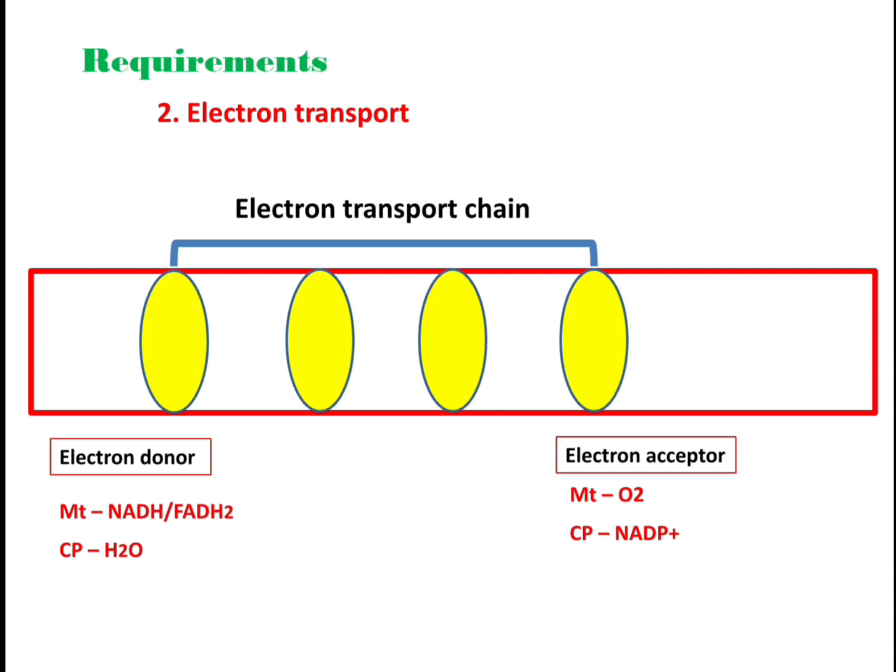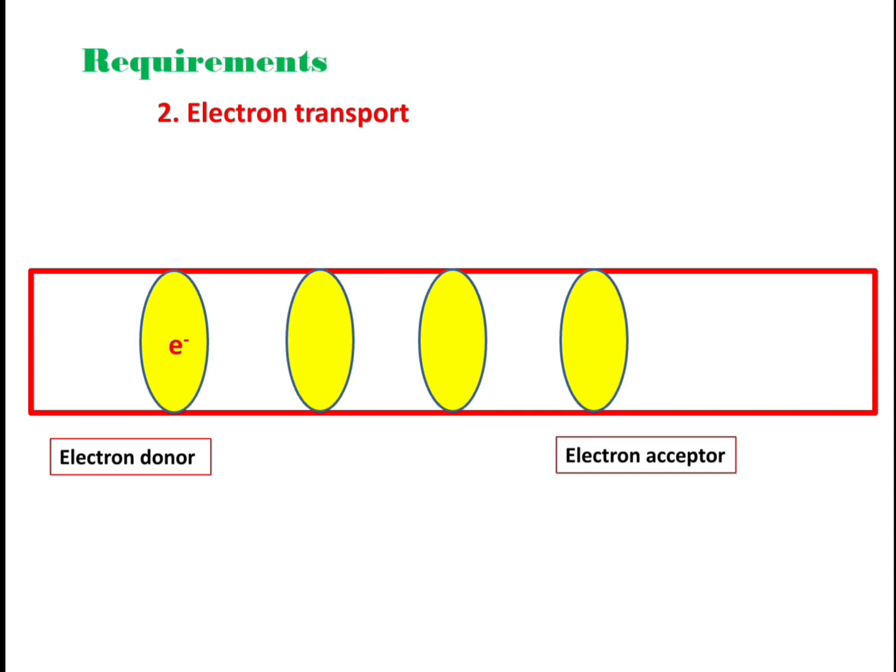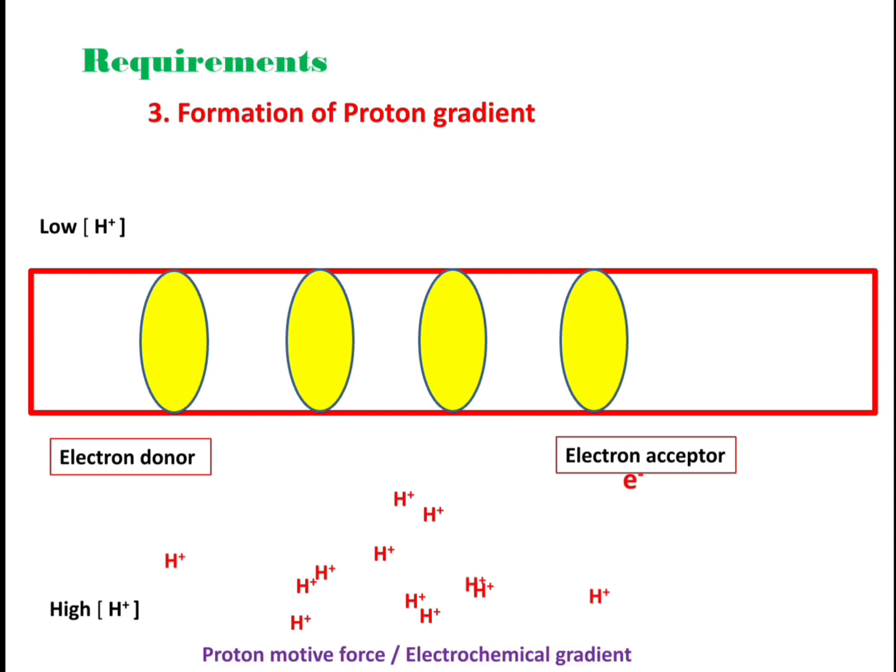The requirement is electron transport. As electrons move through this electron transport chain, a difference in the concentration of protons is created, known as proton motive force or electrochemical gradient, which is a type of potential energy.